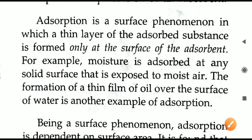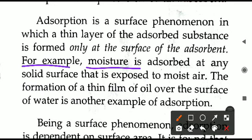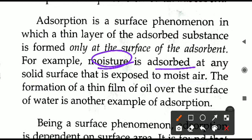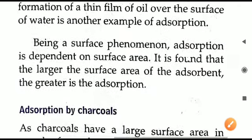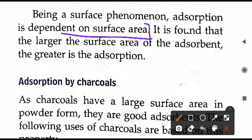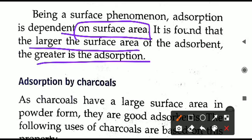Another example: moisture is adsorbed at any solid surface when a substance is exposed to moist air. Take any substance in open air — it will absorb moisture, and a water layer will deposit there. The formation of a thin film of oil over the surface of water is another example of adsorption. Adsorption is totally dependent upon surface area: the larger the surface area, the greater the adsorption, and vice versa.